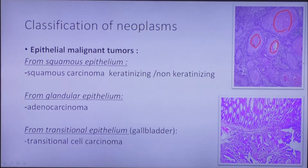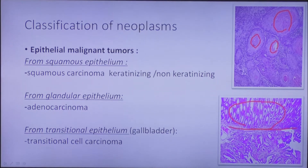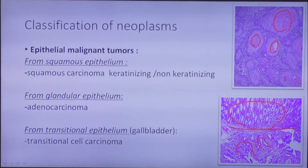If those pearls were absent, we would call it non-keratinizing squamous carcinoma. On this picture we see adenocarcinoma of the stomach. Here you can see normal glandular epithelium of the stomach with regular glands, the basement membrane, and in the muscle layer we see atypical irregular glands — and this is cancer.